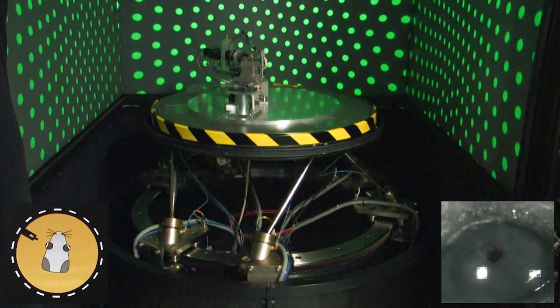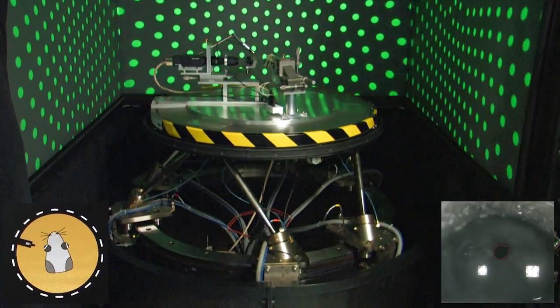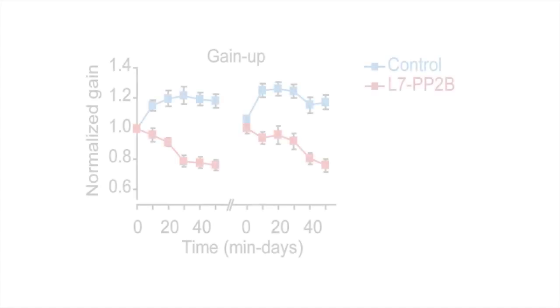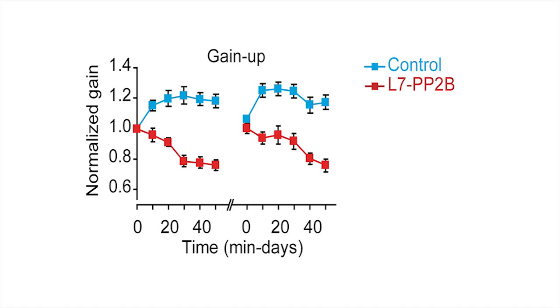This increase in the amplitude of the eye movements can still be seen when we return to the baseline measurements in the dark. And this is indeed what we saw in the normal control animals indicated in blue. Over the course of one hour training, the gain of the eye movements was substantially increased.